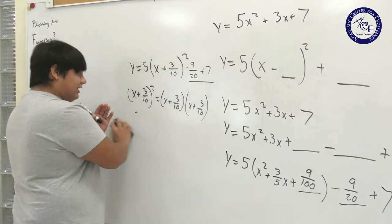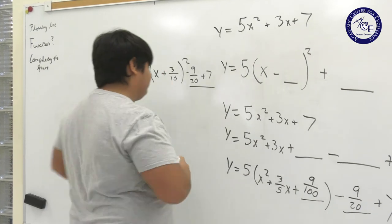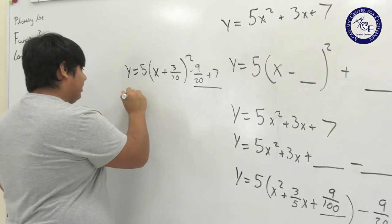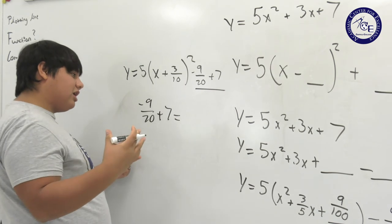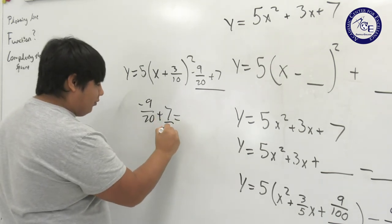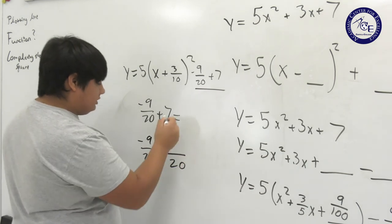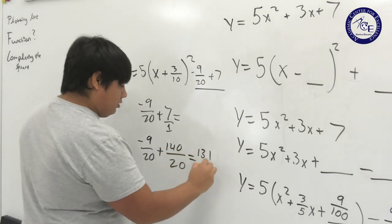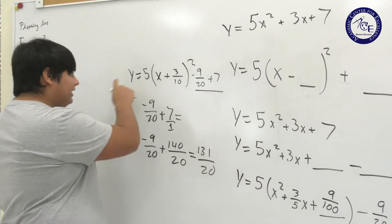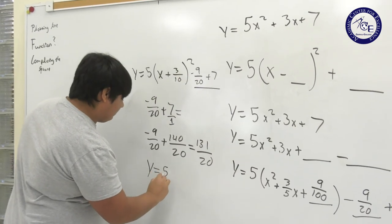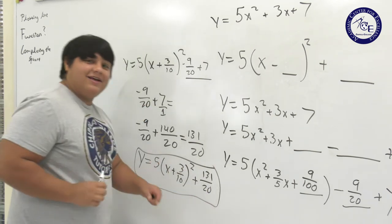The last step is to add negative nine over 20 plus 7. We need a common denominator of 20, so 7 becomes 140 over 20, giving us 131 over 20. That doesn't reduce - 131 is prime. So now we have all we need: y equals 5 times (x plus three-tenths) squared plus 131 over 20. We have completed the square!